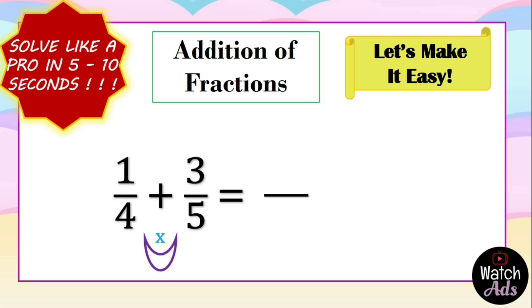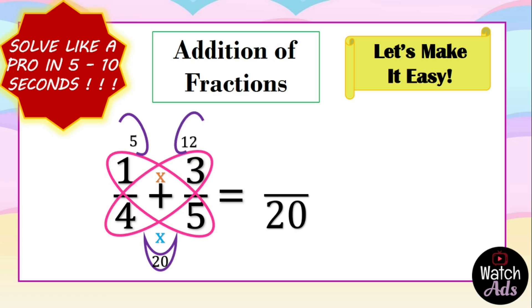4 multiplied by 5 gives us 20, that will be our denominator. Next we multiply 1 and 5, the answer is 5. Next we multiply 3 and 4, the answer is 12. Since our process is addition, we add 5 and 12, it gives us 17 over 20.